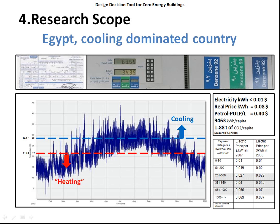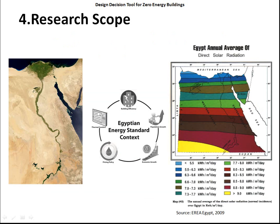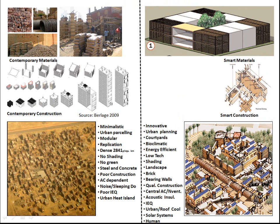To be familiar with the Egyptian context, it's very cooling-dominated. Heating is very minimal — we don't really heat. The prices of energy are very highly subsidized, so there is no consciousness around environmental design. And most importantly, the solar radiation is very high — reaching something from eight to nine kilowatt-hours per square meter per day. The existing typology in Egypt is most probably those narrow buildings that are everywhere popping up in cities. They are minimalistic, urban packed parcels, modular replication, no shading, no greenery, steel and concrete, poor construction, AC-dependent, and poor indoor air environmental quality.